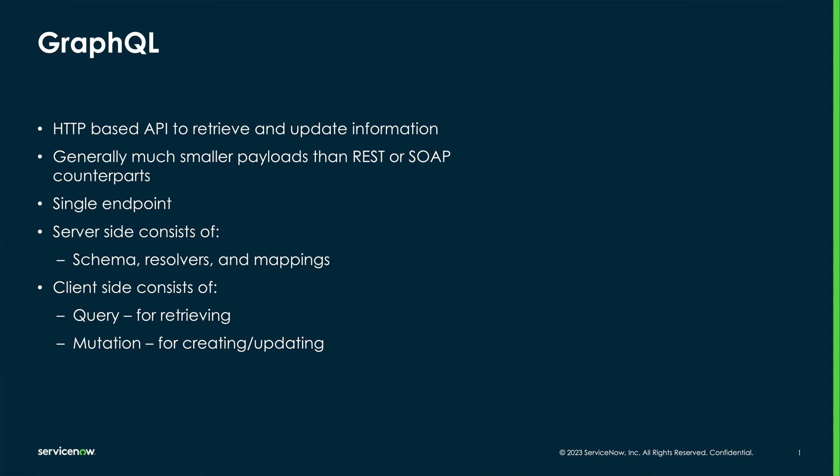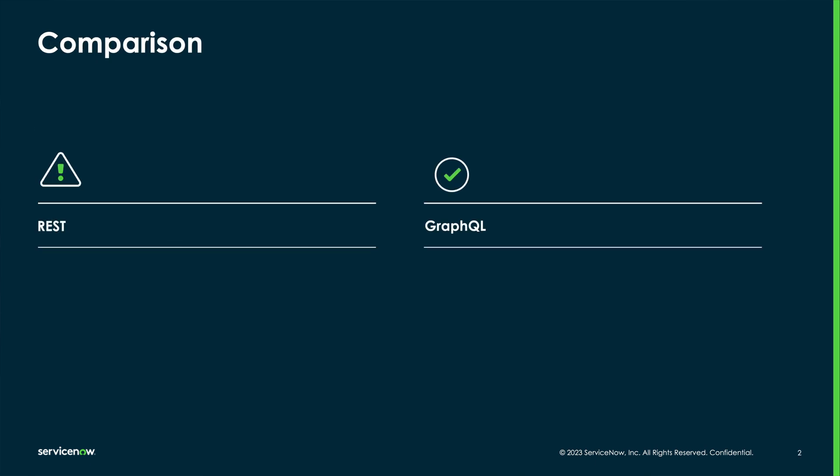Let's do a quick comparison for those of you who are familiar with REST APIs. Where REST APIs typically have multiple endpoints or URLs to access information in different ways, GraphQL simplifies this with a single endpoint, often for a group of similar operations like case management, inventory, or return goods authorization.